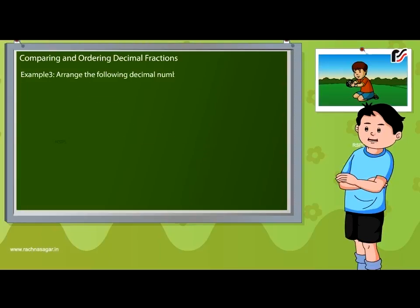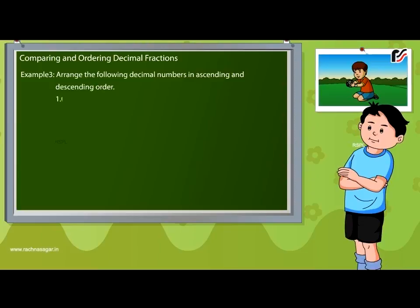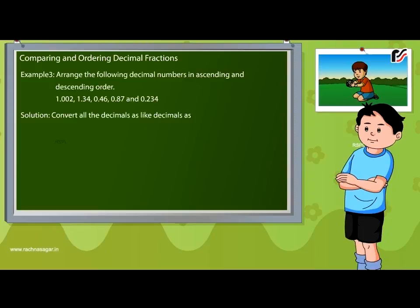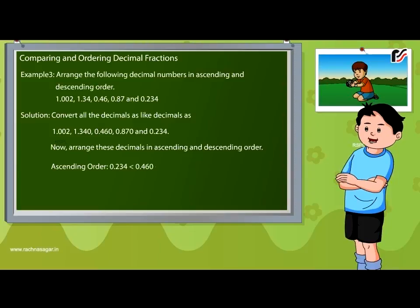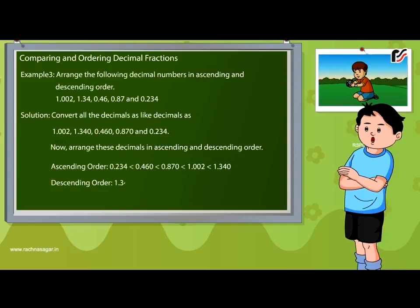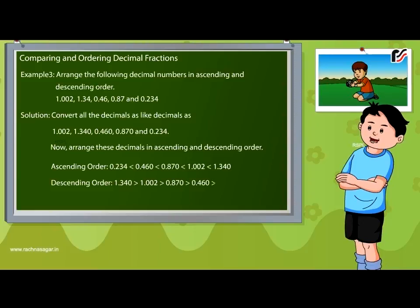Arrange the following decimal numbers in ascending and descending order: 1.002, 1.34, 0.46, 0.87, and 0.234. First convert all decimals to like decimals: 1.002, 1.340, 0.460, 0.870, and 0.234. Ascending order: 0.234 < 0.460 < 0.870 < 1.002 < 1.340. Descending order: 1.340 > 1.002 > 0.870 > 0.460 > 0.234.